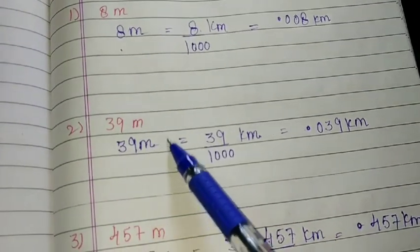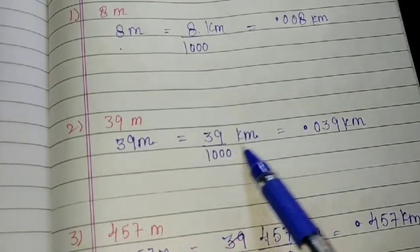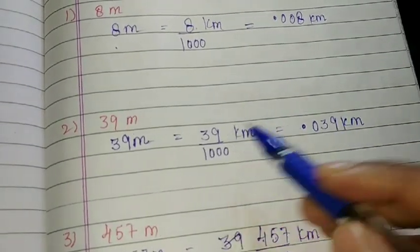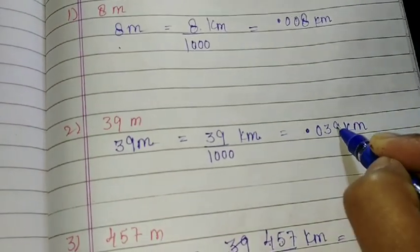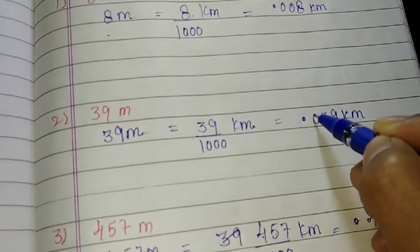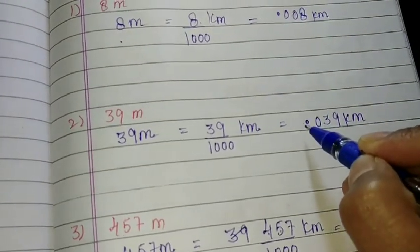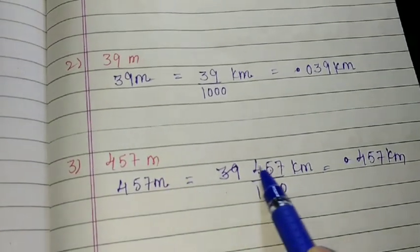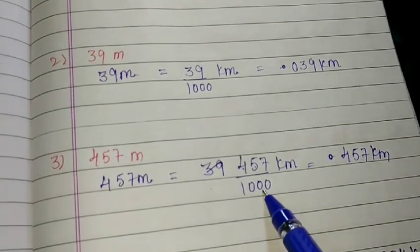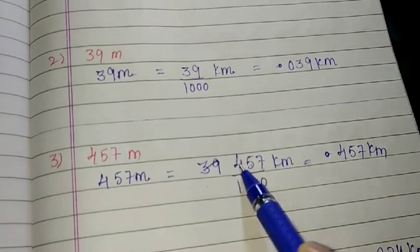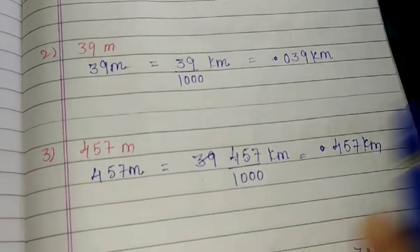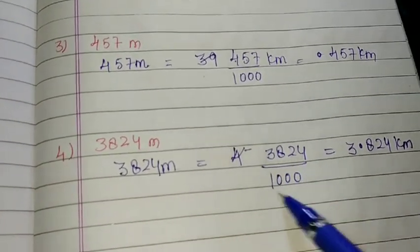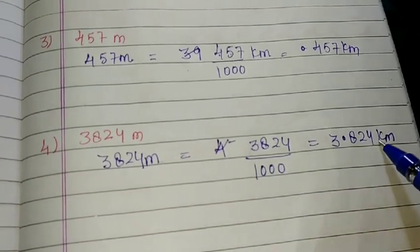39 meter — if I have to convert it into kilometer, I divide it by 1000. Upside only 2 digits are there: 3 and 9. I put 1 zero here to make it a 3-digit number and before 3 digits I put the point. 457 meter — how I convert into kilometer? By dividing it with 1000. Upside 1, 2, 3 — three digits are there — and before 3 digits I put the point. Last: 3824 meter — I convert into kilometer by dividing by 1000. So 3824 meter is 3.824 kilometer.